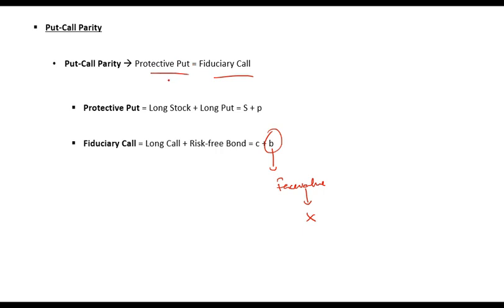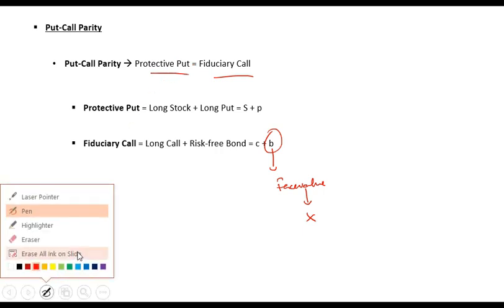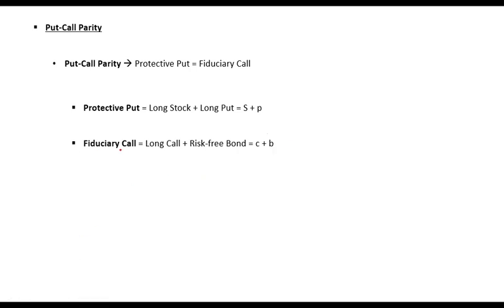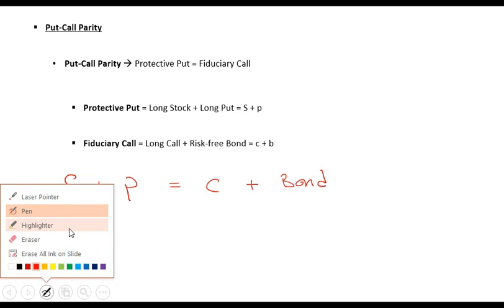For these two to provide the same output, buying an asset in the spot market plus a put option on that asset equals a call option on that asset plus a bond. The face value of the bond is the exercise price, X.